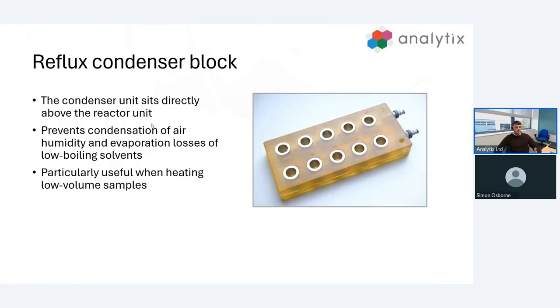Our most popular accessory and often comes with the system is the reflux condenser block. This unit sits directly above our reaction module. Simply we're fitting the vials through this and then into the reaction module. You can see an inlet and outlet for our chiller or coolant line. This is just cooling the top bit of our vials. What this does is it prevents condensation of air humidity and prevents evaporation losses of low boiling point solvents. It's particularly useful if you're using very low volume samples. You don't want to lose this all to the vapor phase.